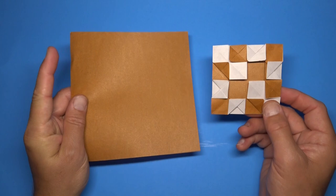So for this 4x4 chessboard flicker, you need a square of paper. But if you want to make a full chessboard, an 8x8 chessboard, then you need to put four of these together. So you need four squares of paper.